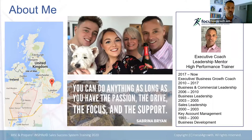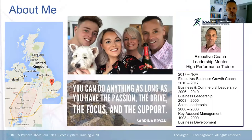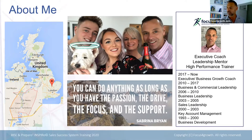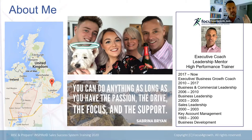Most of you will know me, but if you don't, I'm Justin Lee. I live in Cambridgeshire, about 45 minutes on the train north of London. I'm an executive coach. I live here with my family — my wife Katie, my daughter Grace who you've already met, and my son Robbie. We used to have our dog George, who unfortunately passed away three weeks ago, but I didn't have the heart to move him out of the picture. I firmly believe you can do anything as long as you have the passion, the drive, the focus, and the support.